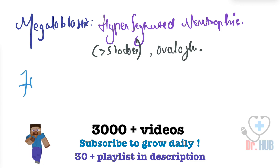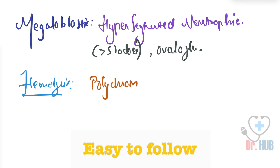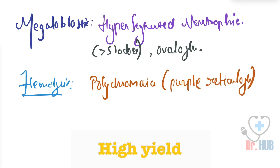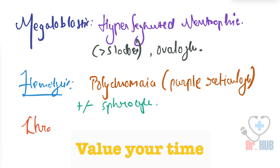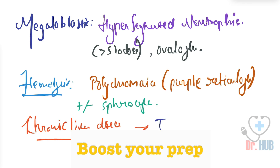In hemolysis, the peripheral blood smear shows polychromasia — these are the purple reticulocytes — and spherocytes may also be present. Chronic liver disease also falls under macrocytic anemia, and its peripheral smear shows target cells.